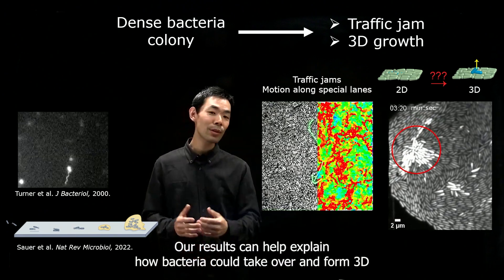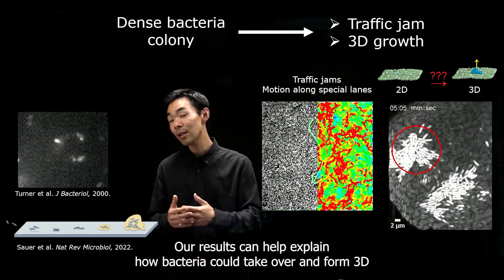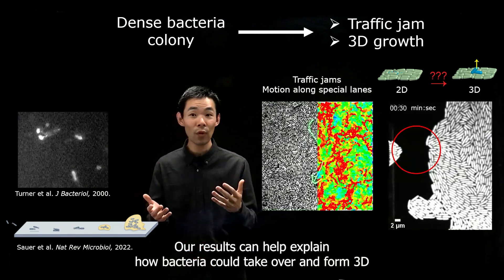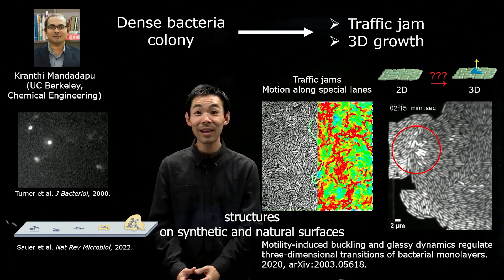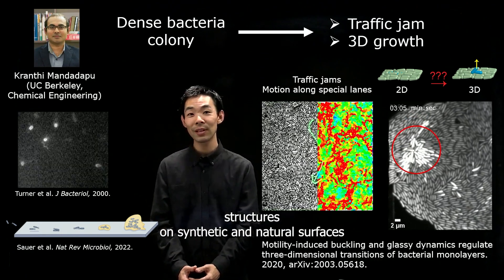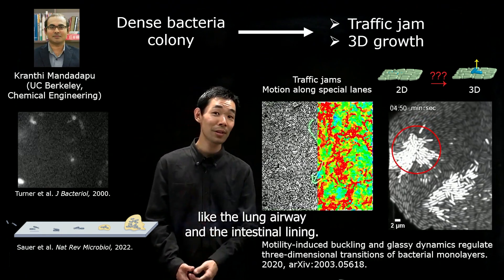Our results can help explain how bacteria could take over and form three-dimensional structures on synthetic and natural surfaces like the lung airway and the intestinal lining.